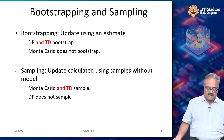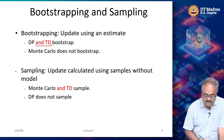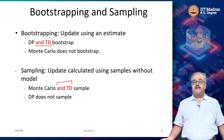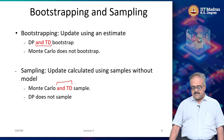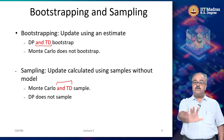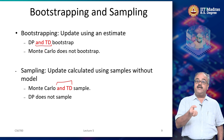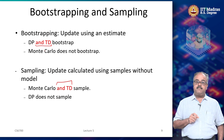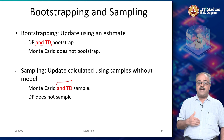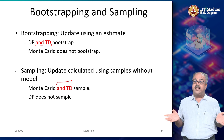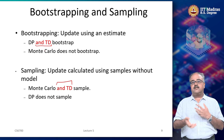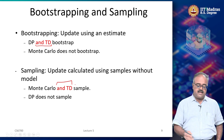TD learning bootstraps just like dynamic programming and samples just like Monte Carlo, giving us a powerful new algorithm. The advantage of bootstrapping is that you do not have to wait until the end — you have an estimate for your target as soon as you take one step. And sampling has the advantage that you do not need to know the dynamics; all you need is either a sample model or actual samples from the real environment.